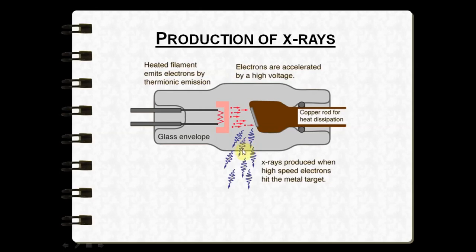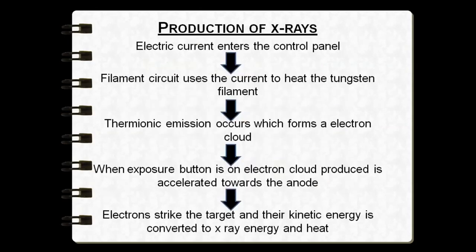The x-ray beam then moves across the collimator, which controls the size and shape of the x-ray beam. It then travels through the lead-lined position indicating device (PID) and exits through the tube head at the opening of the position indicating device.